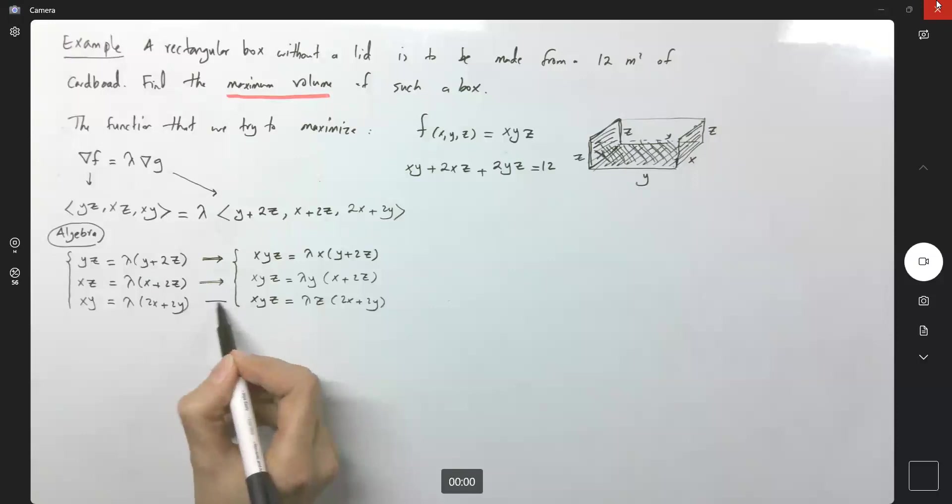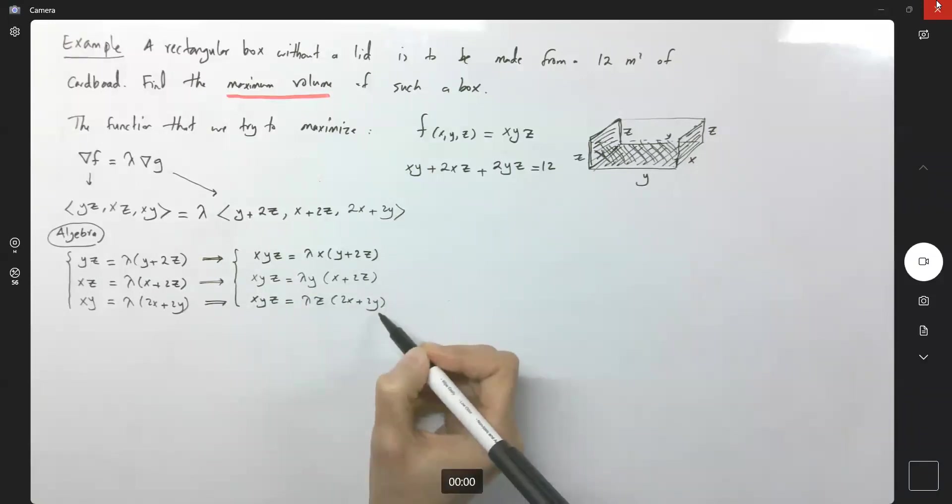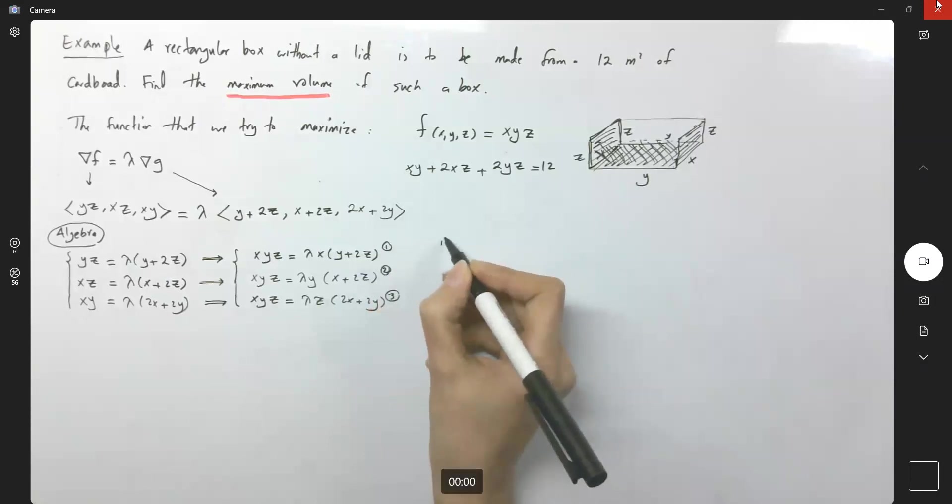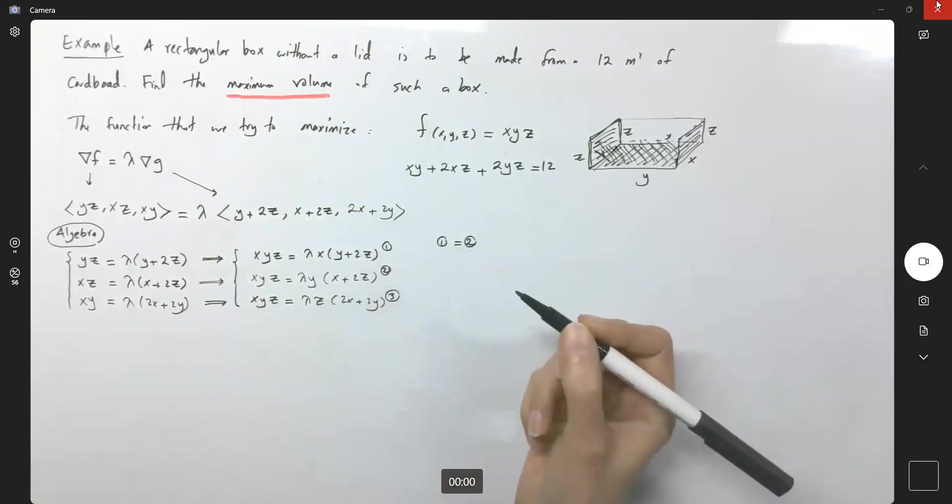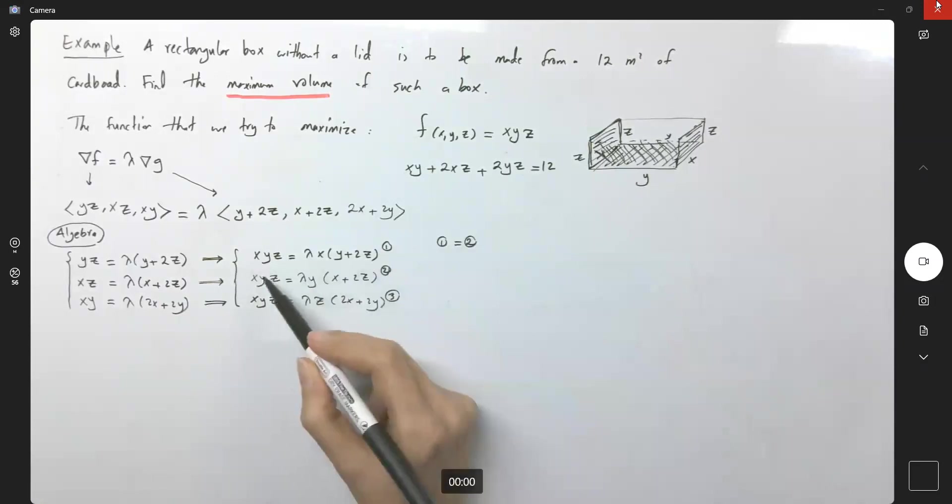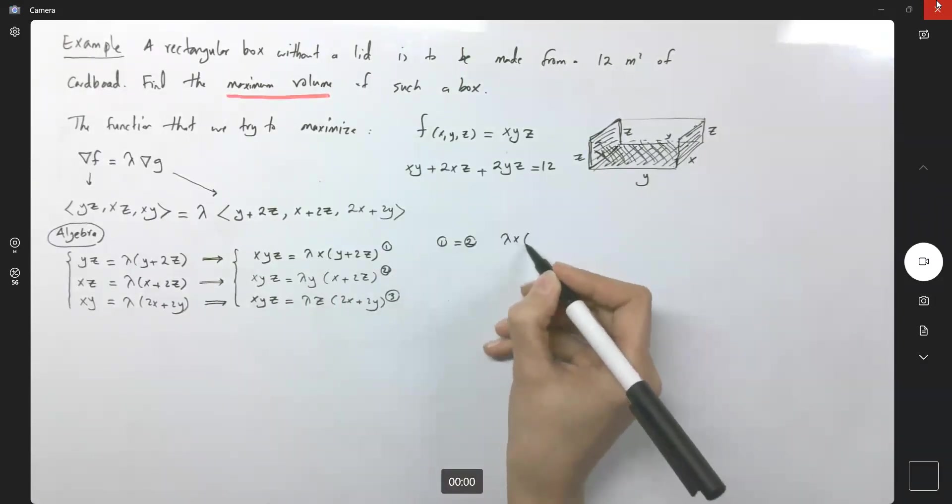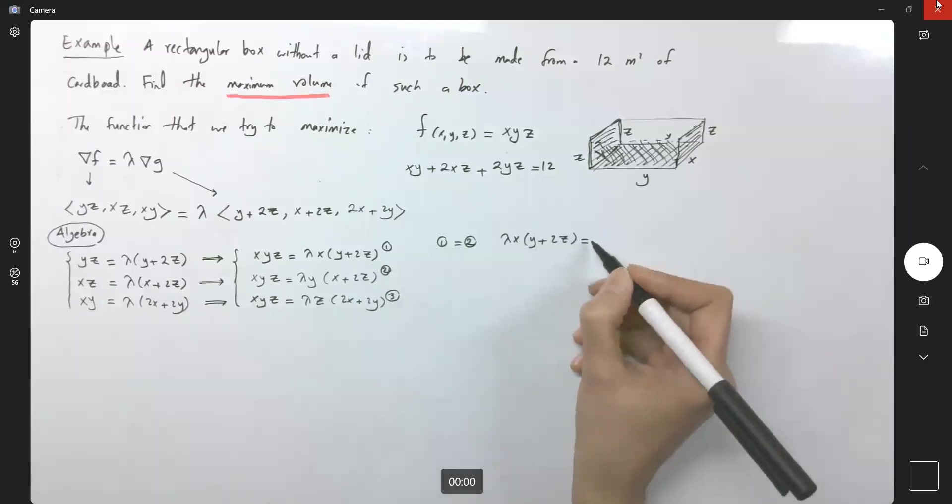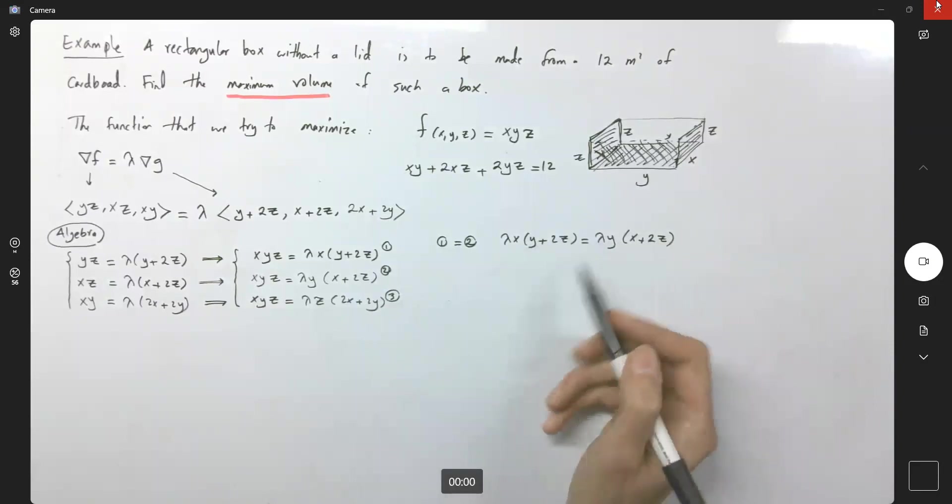So since these are all equal to each other, it means that you can set these equations equal to each other, pair by pair. Let's call this one, for example, one, two, and this got three. I'm going to set one equals to two. Let's see what happens. One is equal to two. It means that lambda x, y plus two z is equal to lambda y, x plus two z. Let's try to solve this, see what do we have.